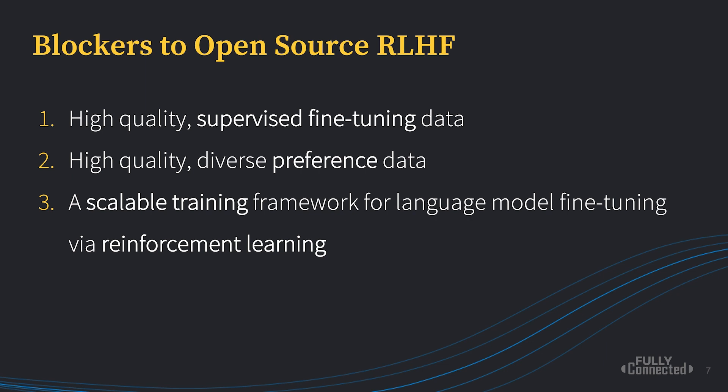So blockers to open source RLHF — what makes this problem difficult? Number one, high quality supervised fine-tuning data is generally difficult to find. There is a kind of step zero which I didn't mention beforehand: before you collect preferences among various model outputs, you collect a bunch of high quality responses telling your model roughly what you want it to do, and then you fine-tune it on these responses. This gets the model more in-distribution — if you're familiar with the concept of behavior cloning from the RL domain, you can think of it as analogous to that.